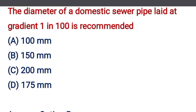The diameter of the domestic sewer pipe laid at a gradient of 1 in 100 is recommended — option A: 100 mm, option B: 150 mm, option C: 200 mm, option D: 175 mm. The correct answer is option B, 150 mm.